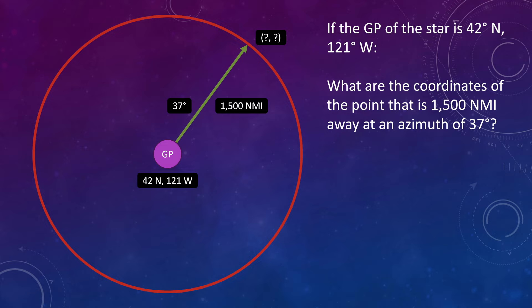So just to recap, we've got the GP of the star, and we want to know the coordinates of all the points that are 1500 nautical miles away. But for this example, we've just chosen an azimuth at random, 37 degrees. And the coordinates of that point work out to be 58.18 degrees north, 92.78 degrees west.